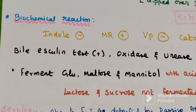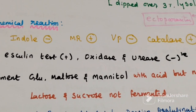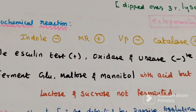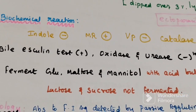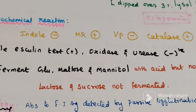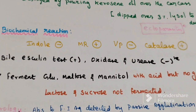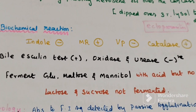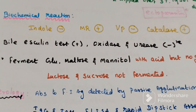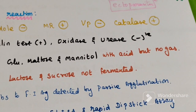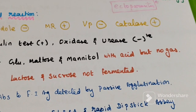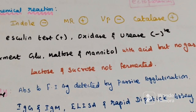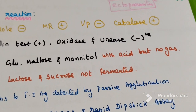Biochemical reactions: Indole test negative; MR test positive; VP negative; Catalase test positive; Bile-esculin test also positive; Oxidase and urease test negative. It can ferment glucose, maltose, and mannitol, producing acid but no gas. Whereas lactose and sucrose are not fermented.